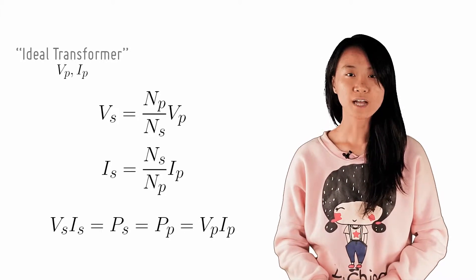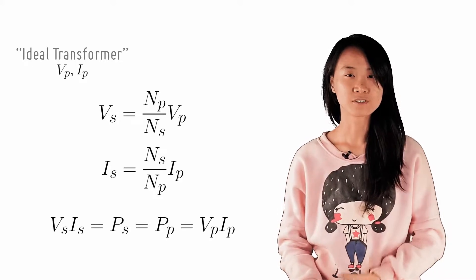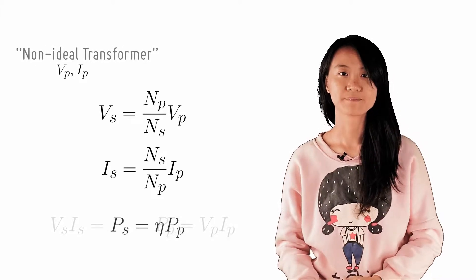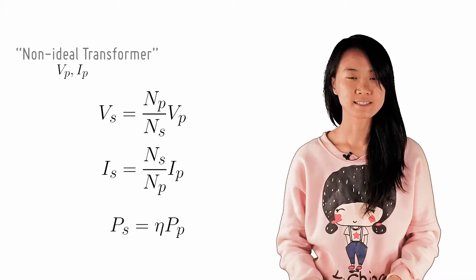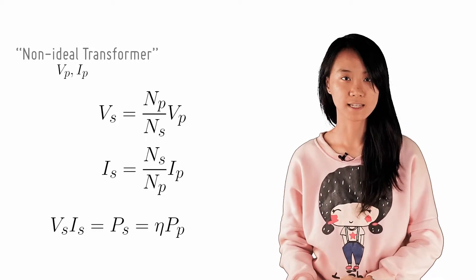In the case of a non-ideal transformer, however, the output power is not equal to the input power, but rather ps is equal to eta times pp. And this therefore implies that vs times is must equal eta times vp times ip.